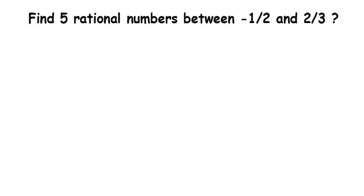Here's a question from rational numbers: find five rational numbers between minus 1 by 2 and 2 by 3. Now, the way of solving this type of question will remain the same. Remember, there are infinitely many rational numbers between two given rational numbers, so my answer may not match with the one given by your teacher. Here we have to find only five rational numbers between minus 1 by 2 and 2 by 3.